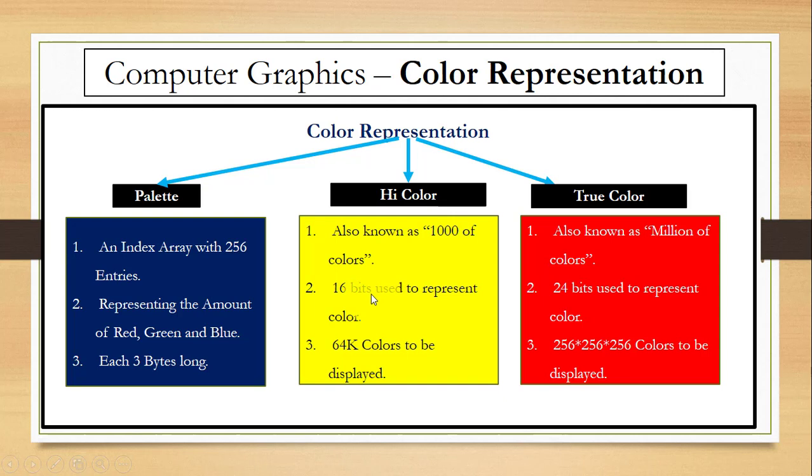Here, we have 16 bits used for the representation. And here, we are using 24 bits for the representation of color. The total number of colors displayed is 64,000. And you can see here, we have millions of colors displayed in this, that is 256 into 256 into 256.